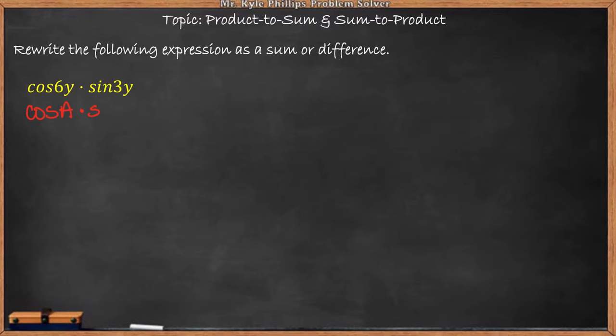Now the formula for that we're going to write right over here. So cosine of A times sine of B